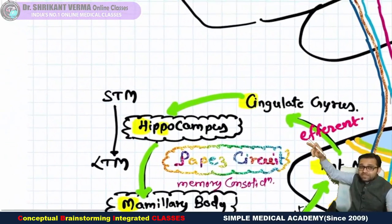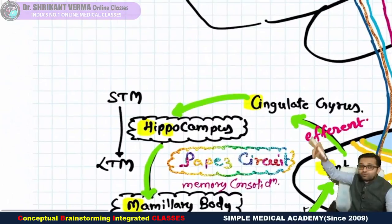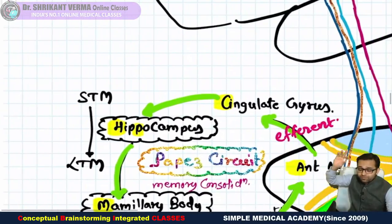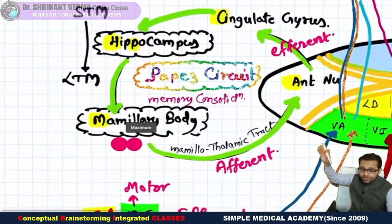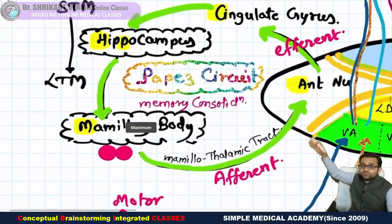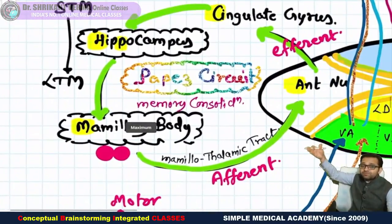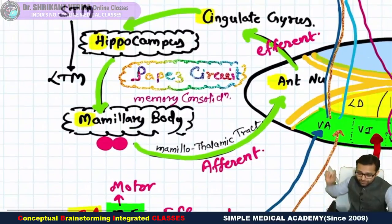The hippocampus is the site for the short-term memory conversion to long-term memory. And from the mammillary body to the thalamus, that is the mammothalamic tract.